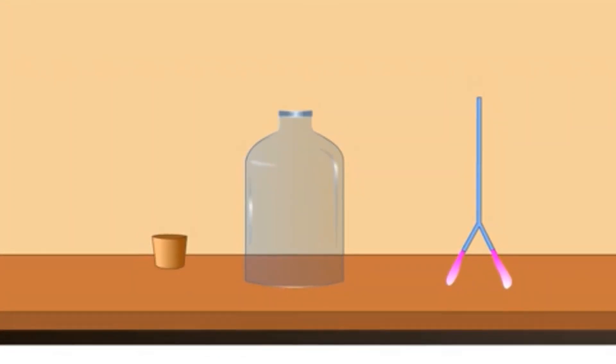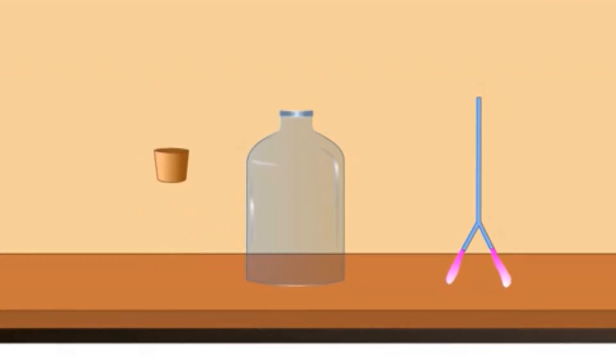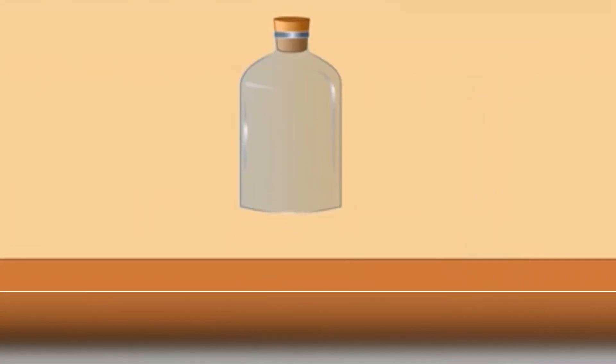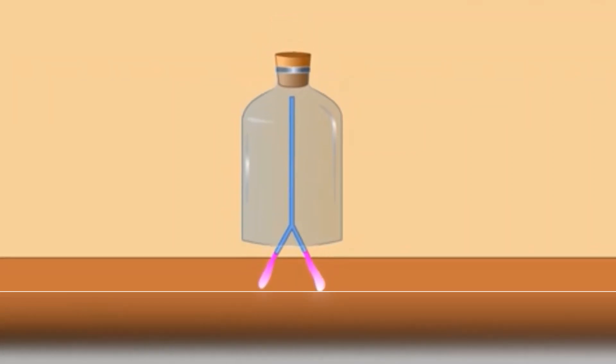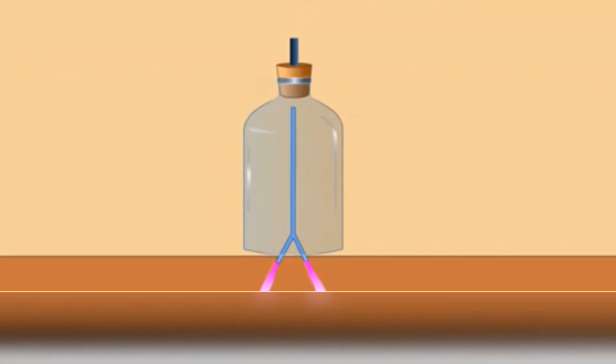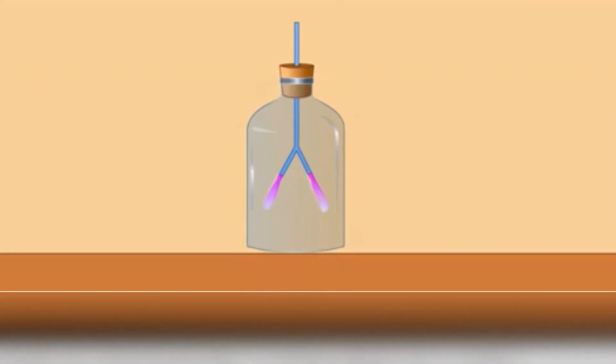Now, cap the bottle. Attach the balloons inside the bottle from its open bottom. Make a hole in the plastic cap and pass the open end of the tube outside the bottle through the hole.